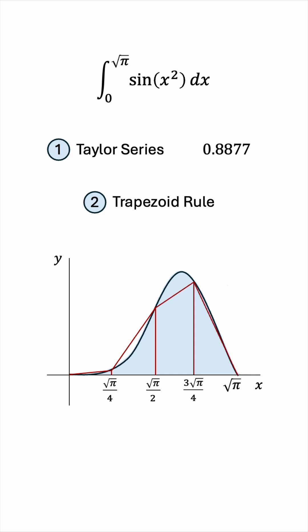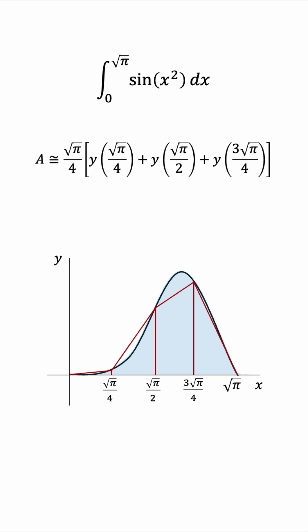So the area of a trapezoid is of course the average base length times height, and we can use that to approximate this shaded area. We'll have root pi over 4 times the function evaluation at these three middle points. Luckily, the first point and last point evaluate to 0, so that makes our life easier.